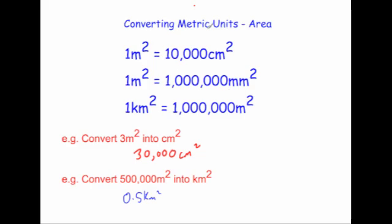To convert metric units of area, remember it won't be the same as converting lengths — it's that value squared. Just take whatever the conversion factor is for the length and multiply it by itself, and that gives you the conversion rate for the metric units of area.